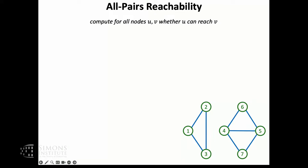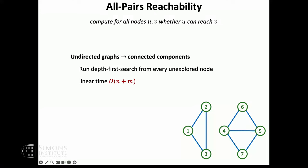If single source is easy, then we try to solve the all-pairs version: for any pair of nodes, whether you can reach one from the other. In undirected graphs, that's again very simple. We compute the connected components of the graph — here's one connected component, here's another. By running DFS, one can solve this in linear time. You explore one connected component per DFS run, and if there are unexplored nodes, you run DFS again. Undirected graphs: very simple, very classic solution.